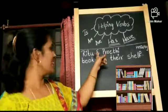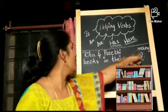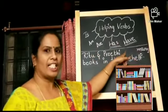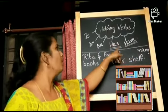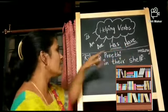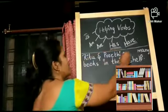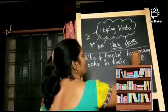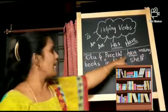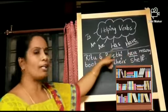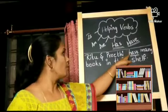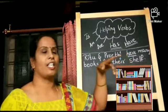Look at here children. 'Rita and Preeti, many books in their shelf.' Is there any link in the sentence? No, we need to add a helping verb to link the sentence. Have. We use have because Rita and Preeti are more than one person. So, we use have in this sentence.